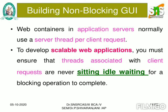The next topic is how to build non-blocking GUIs. The web container in web application servers normally uses one server thread per client request, so for each client request the web container uses a particular server thread to identify which client is making a request. To develop a scalable web application, you must ensure that the thread associated with a client request does not sit idle waiting for a particular event to occur or for a blocking operation to complete.